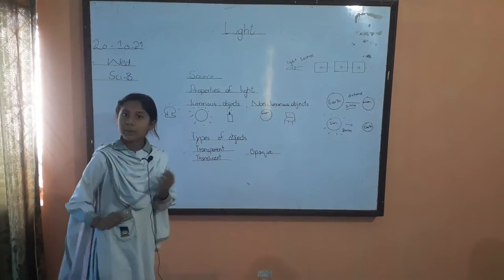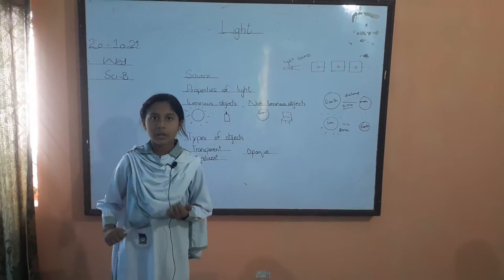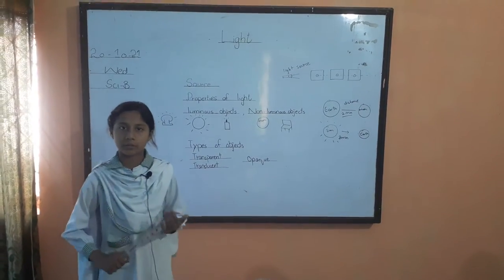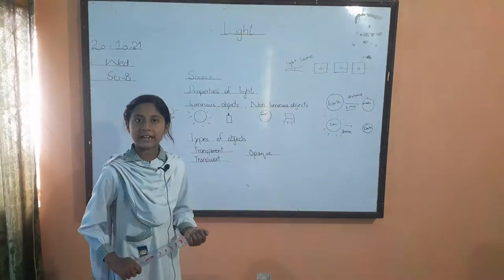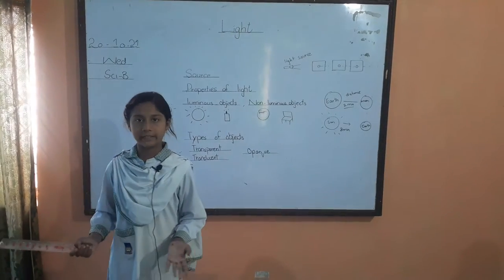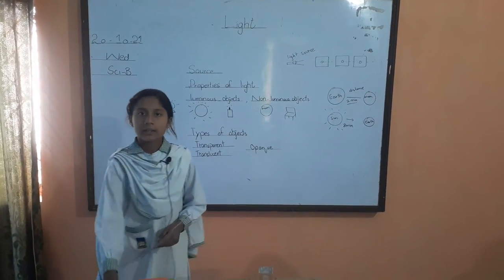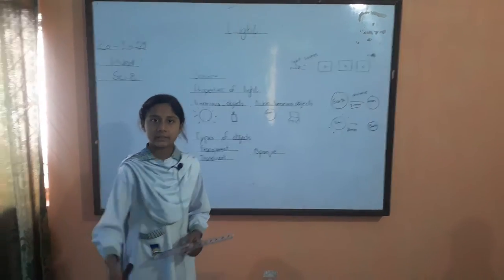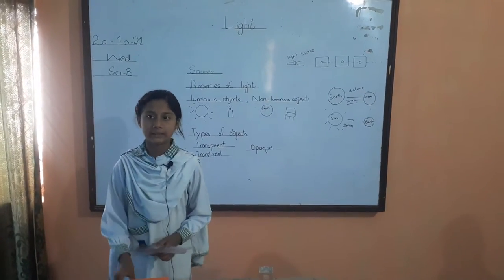There are two types of light: luminous objects and non-luminous objects. Luminous objects have their own light. This torch is a luminous object. Sun is a luminous object.